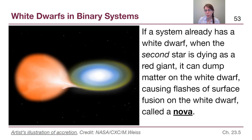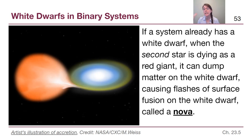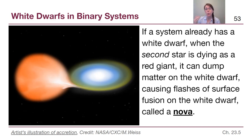If a system already has a white dwarf, the second star is dumping material onto an extremely hot, dense object. That material can go through a quick flash of surface fusion where all of the new material fuses all at once in a bright flash called a nova. This can absolutely happen multiple times — if the red giant continues to send material onto the white dwarf and it's not near the Chandrasekhar limit, it will just flash-fuse the new material quickly. When we study stars that change their brightness, sometimes we catch a nova in that data set: a white dwarf brightly flashing every so often because of a companion sending it material.